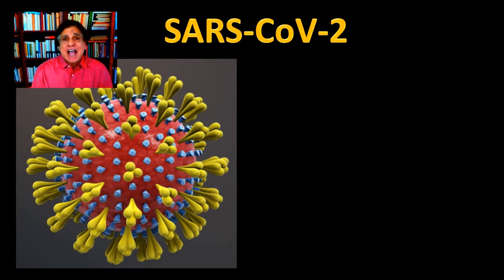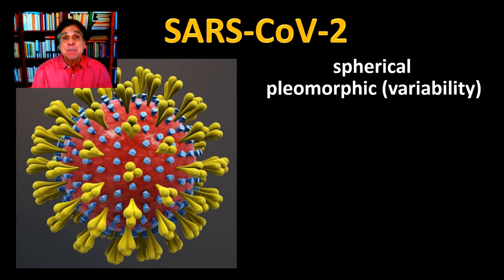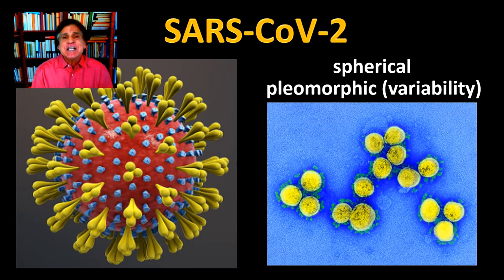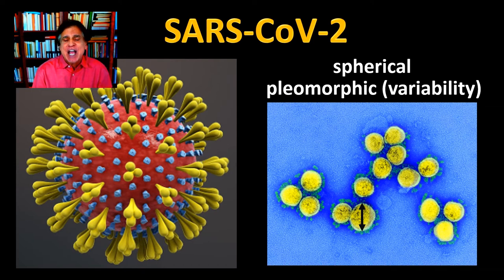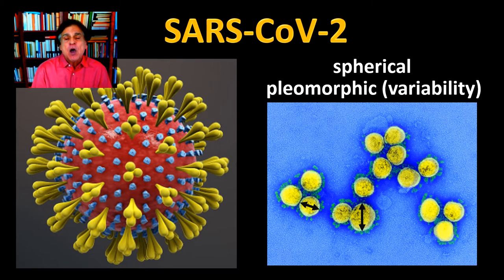SARS-CoV-2 has a mostly spherical shape. I say mostly because scientists refer to its shape as being pleomorphic, which means that it has variability in its appearance. Take a look at this transmission electron micrograph, or TEM image, that shows a number of these particles. You can see that they're not all the same shape nor the same size. This is all about the pleomorphic shape — the shapes vary, but in general we have a spherical appearance to this virion.